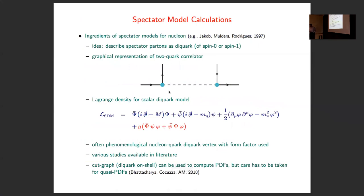Now I come to very basic stuff, having mostly talked about spectator model calculations. The ingredients are very simple: you have in mind just a three-quark structure of the nucleon. You have one active quark, and two quarks are left as spectators. You don't want to work with a two-parton system, so you couple them to a single particle — either spin zero, giving a scalar diquark, or spin one, giving a vector diquark.